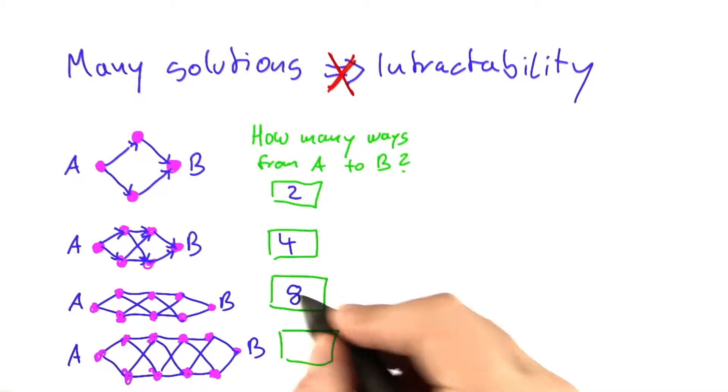The answer is that up here, there's eight different possibilities and down here, there's 16 possibilities.